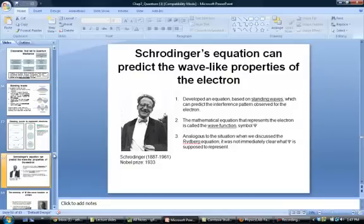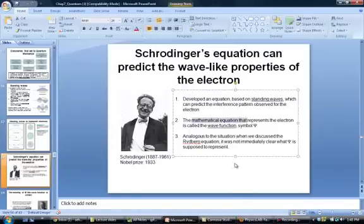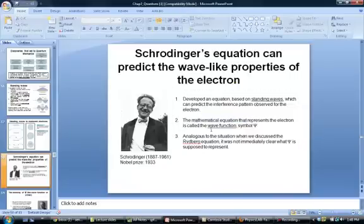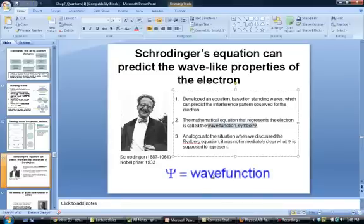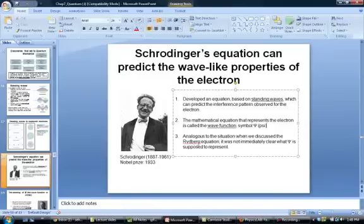So let's wrap this up by talking about the equation that models the electron as a standing wave. This was developed by Schrödinger. The mathematical equation that represents the electron itself because it's using a wave to model the electron is called the wave function. And it's given the symbol psi, the Greek letter psi. And at this particular point when Schrödinger developed the equation the wave function is also not well understood. It allows you to predict how the interference pattern of the electron comes about. But there is no good interpretation of what the wave function represents.